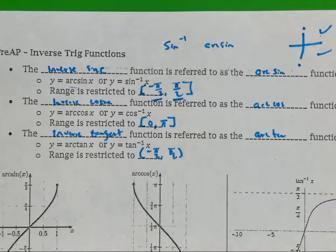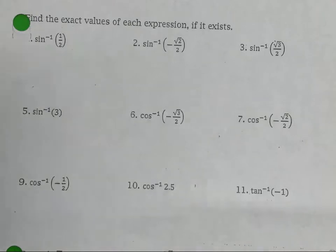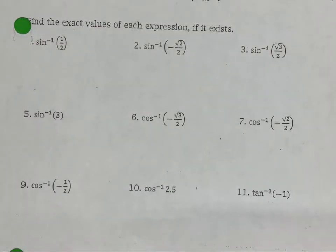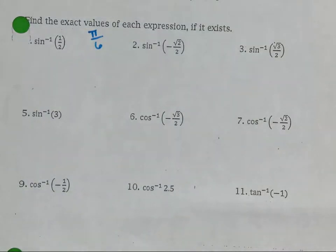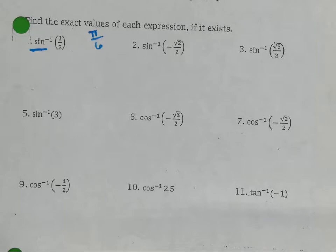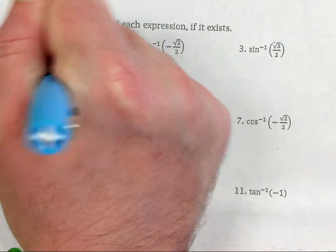Tangent and sine are both quadrants one and four; cosine is quadrants one and two. Now we're going to be working backwards — normally these are the answers you give, but now you're working backwards. Number one: arc sine of one-half. Sine is your y-coordinate. So are you dealing with the pi-over-six or pi-over-three family? Pi over six. Arc sine comes out of quadrant one or quadrant four.